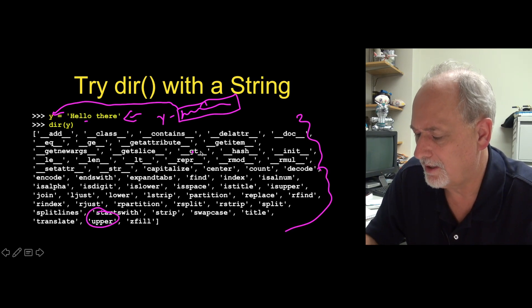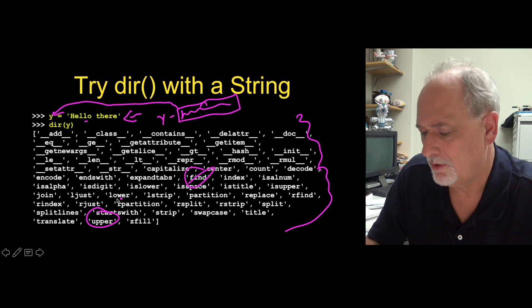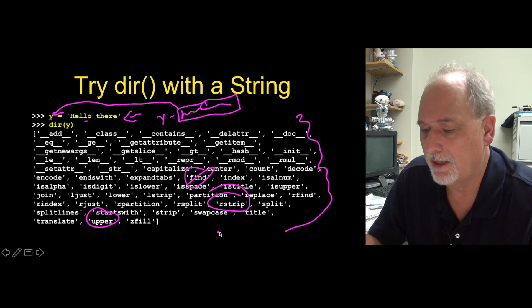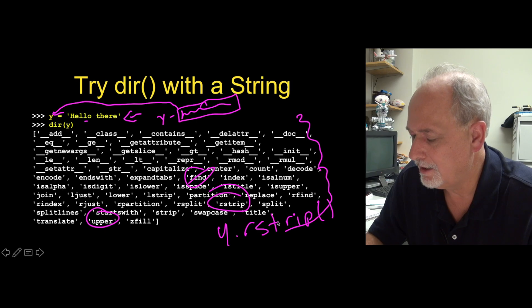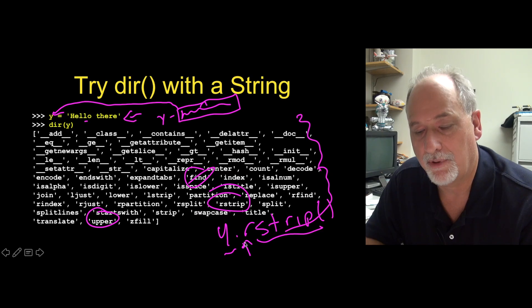And then we see all kinds of methods that we've been using. We've been using methods like upper. We've been using methods like find. We've been using methods like rstrip, right? We've been using these methods. So we're going to like y.rstrip, parenthesis. Again, that's a method. That's an object. Not a class. It's an object. And that is the object lookup operator.